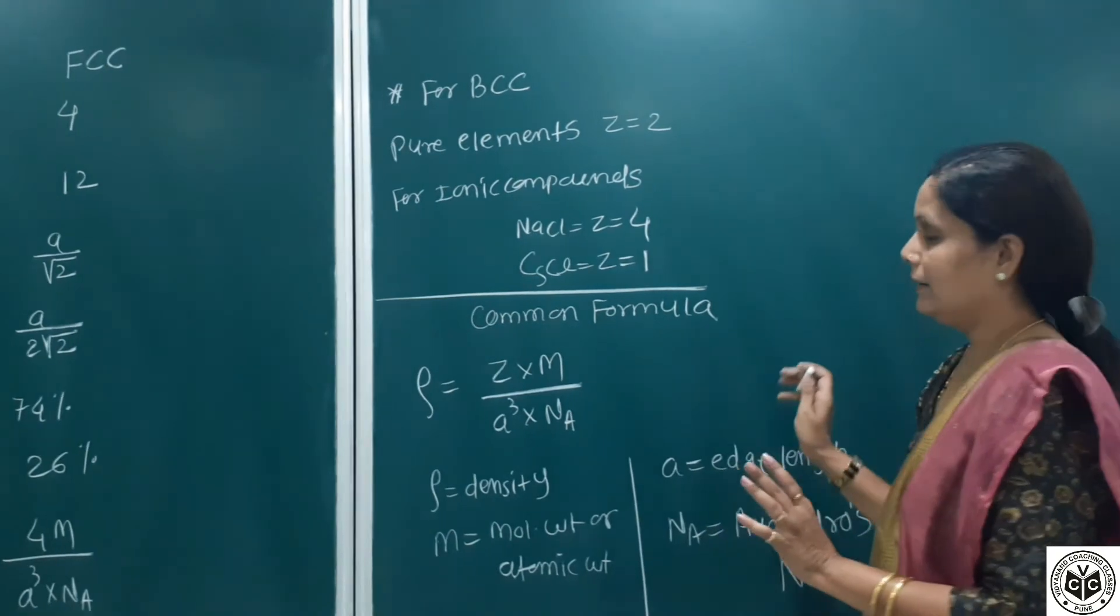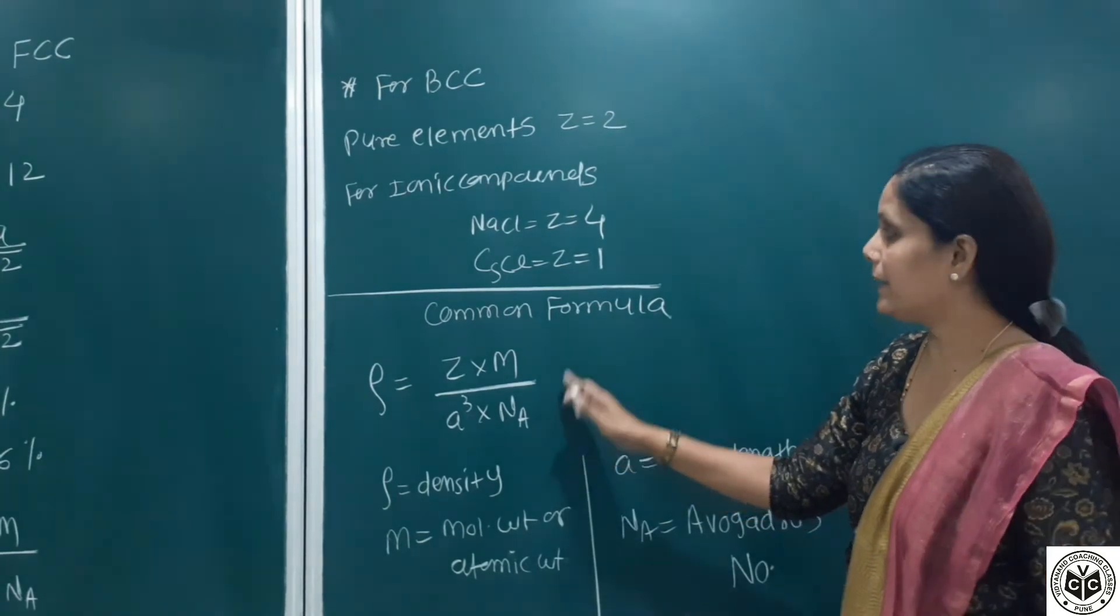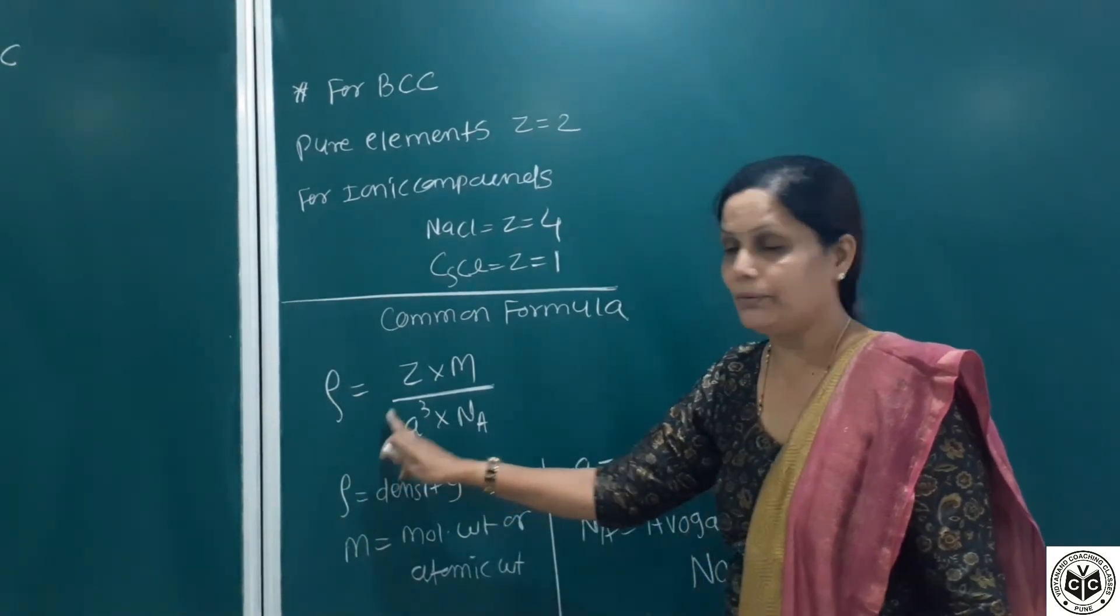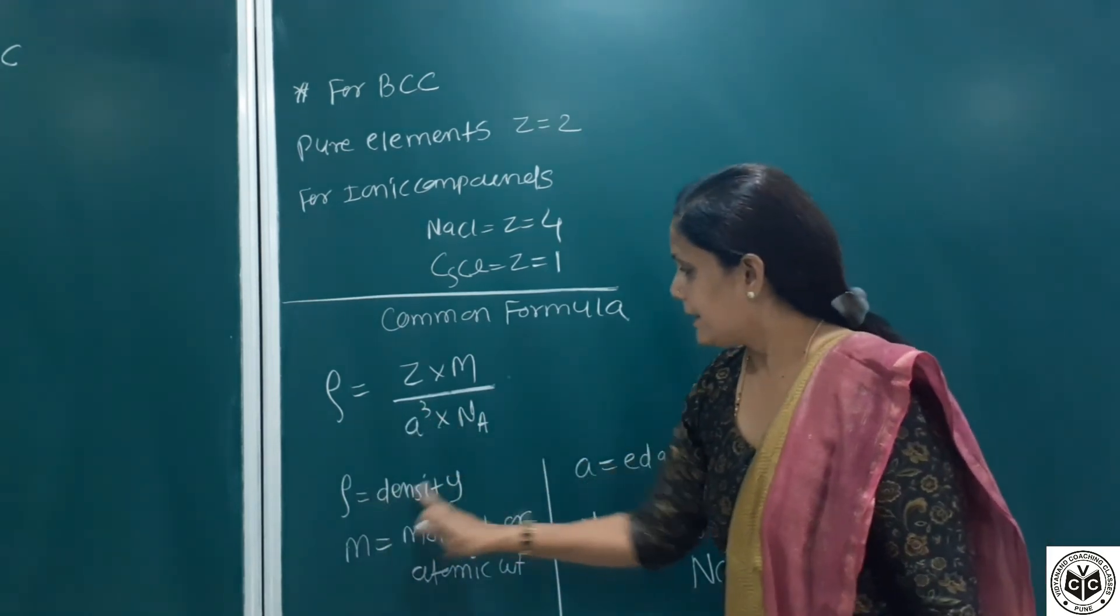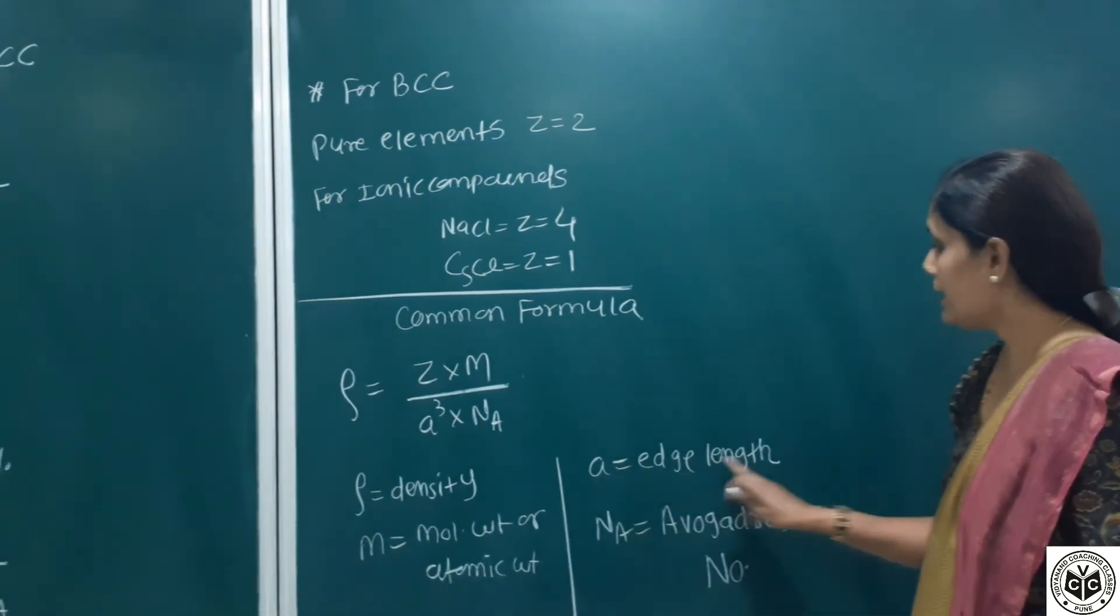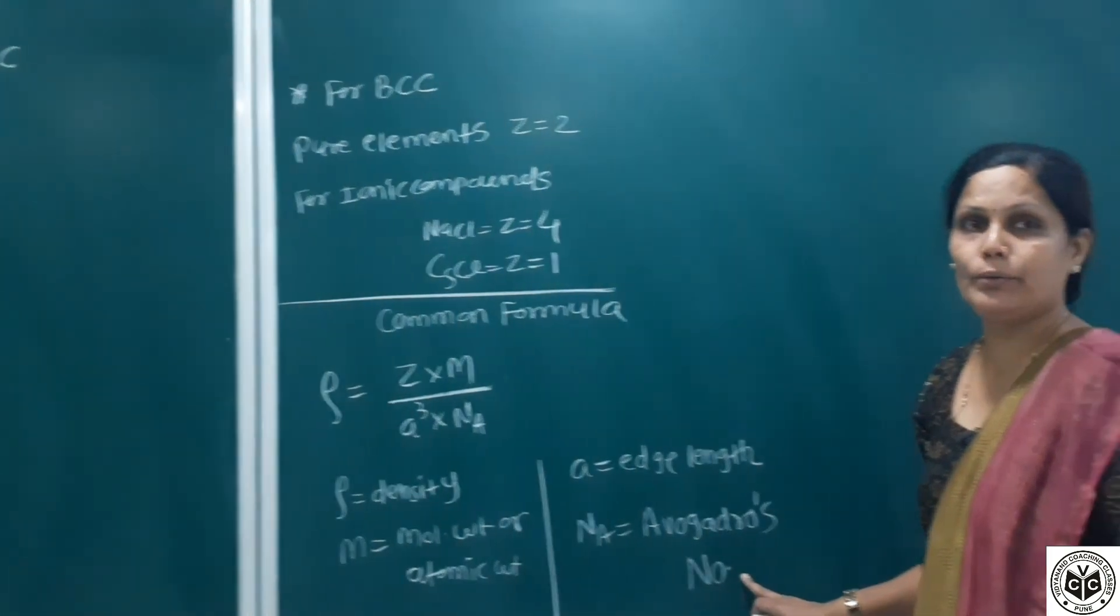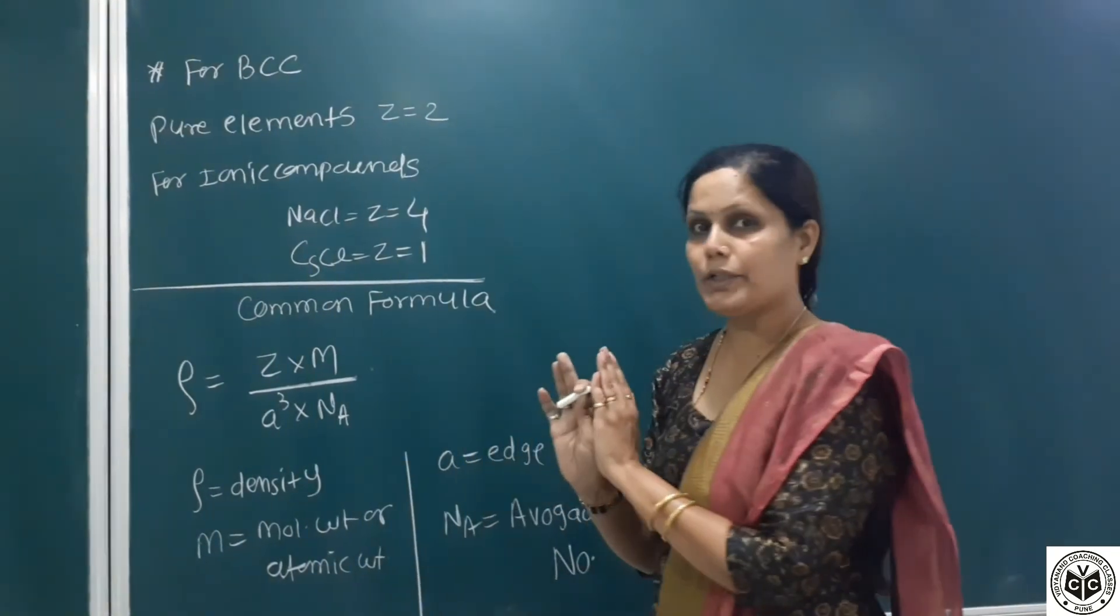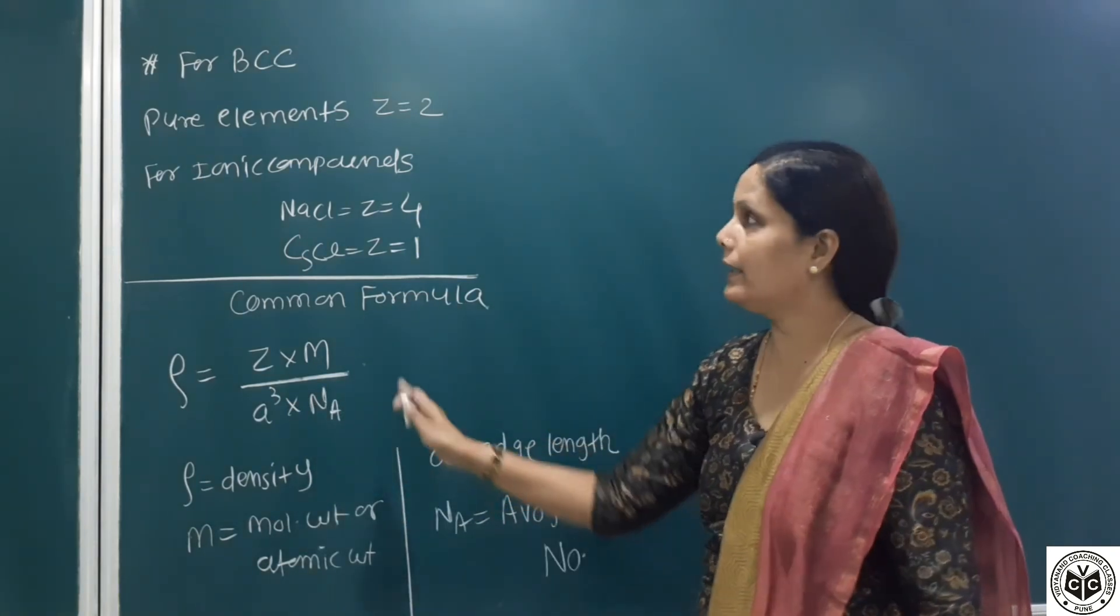Common formula for calculation of volume, total number of constituent particles, or molecular mass: density equals Z times M upon A cube times NA. Density is rho, M is molecular weight or atomic mass, A is edge length, A cube is volume of unit cell, NA is Avogadro number 6.022 times 10 to the 23. This common formula you can use for calculation of anything: Z, M, A cube, or NA, if the other three things are given.